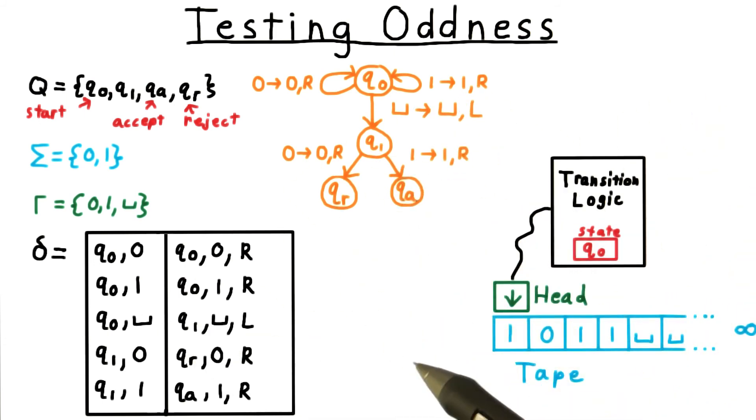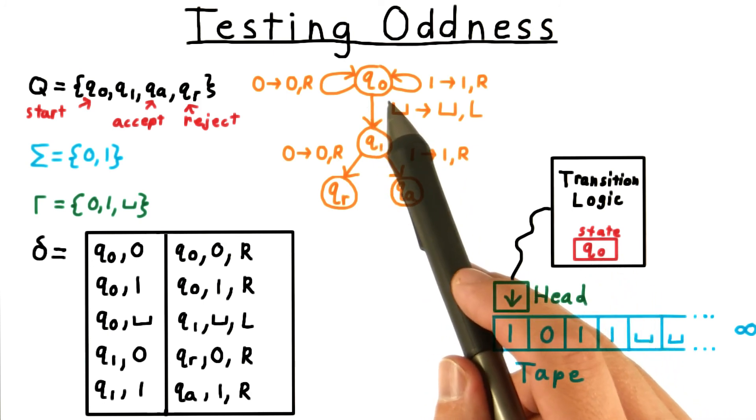Now let's trace through the operation of this Turing machine on this input, 1, 0, 1, 1. The head first reads a 1 from the tape, and we're in state q0. So I go up here and consult the transition table.